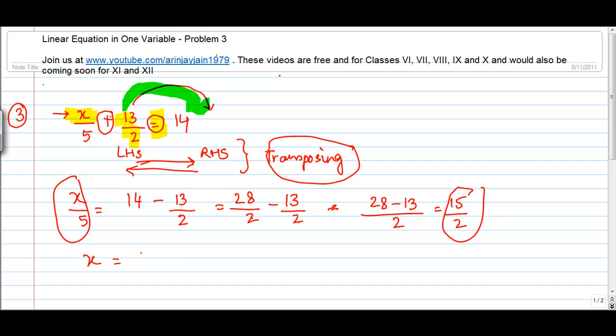So what is the value of x? x is equal to 15 divided by 2. Suppose I multiply both the sides by 5. So this 5 is going to move from here and this becomes 75 by 2.